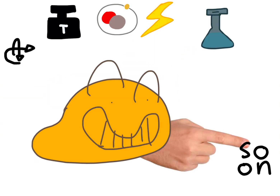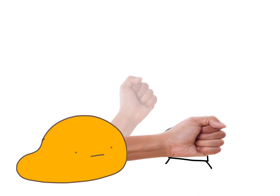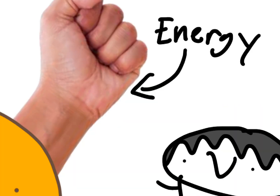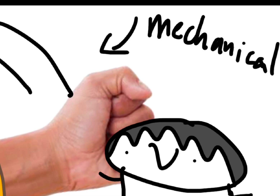An example of energy being transferred is me slapping my brother. When slapping my brother, the kinetic energy from my hand is transferred into mechanical energy and potential energy when hitting my brother, which, as you can guess, sets him flying.